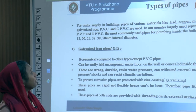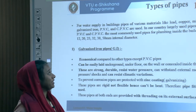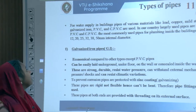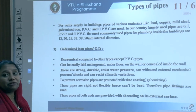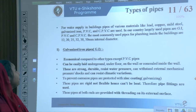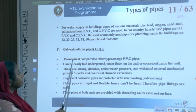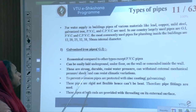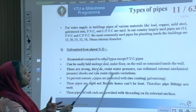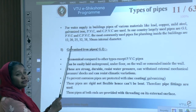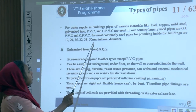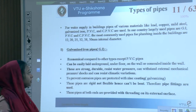For water supply in a building, pipes of various materials are used: lead, copper, mild steel, galvanized iron, PVC, and CPVC. In India, GI pipes, PVC pipes, and CPVC pipes are most commonly used, in internal diameters of 12, 20, 25, 32, 38, and 50 mm.